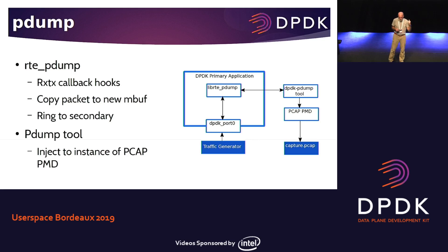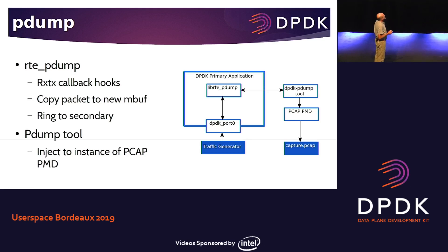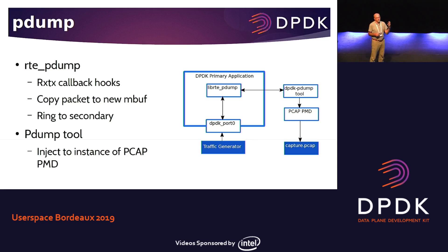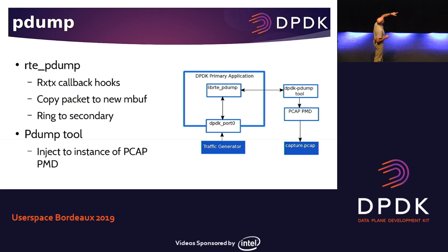This is how pdump works today. There's the primary process. LibRT pdump inserts callbacks into the packet processing path on receive and transmit, takes those packets, copies them, puts them in a ring buffer, and then the secondary process picks up the copy of those packets and calls the PCAP-PMD to generate the pcap file. Having the PCAP-PMD is a useful way of doing it, but it's kind of indirectly using a library when it doesn't need to. This PCAP-PMD shows up in the list of ports, so it's intrusive, and you have all the limitations of PCAP.